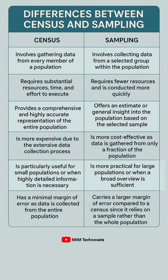Census requires substantial resources, time, and effort to execute. Whereas sampling requires fewer resources and is conducted more quickly, as it focuses on a specific portion of the population.